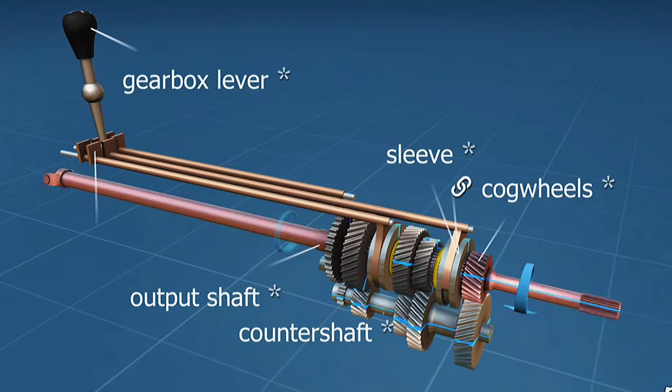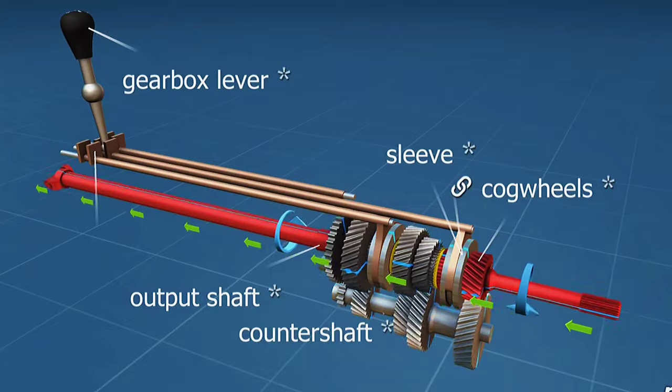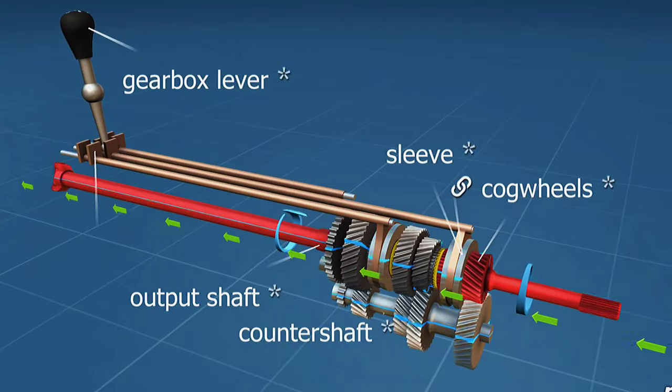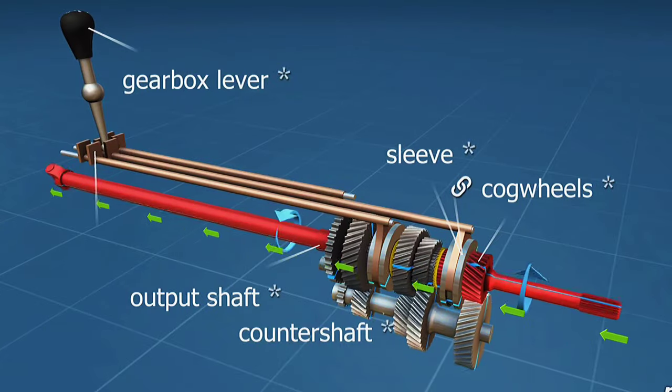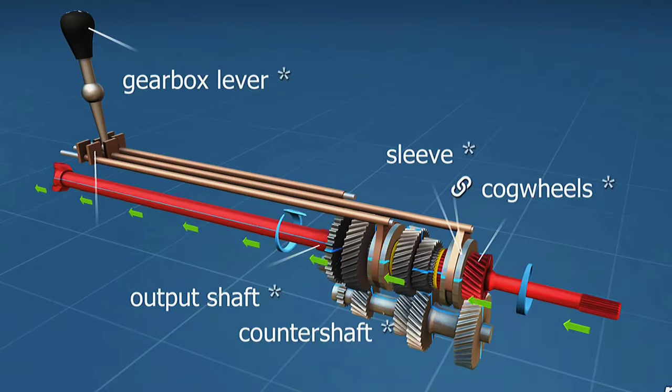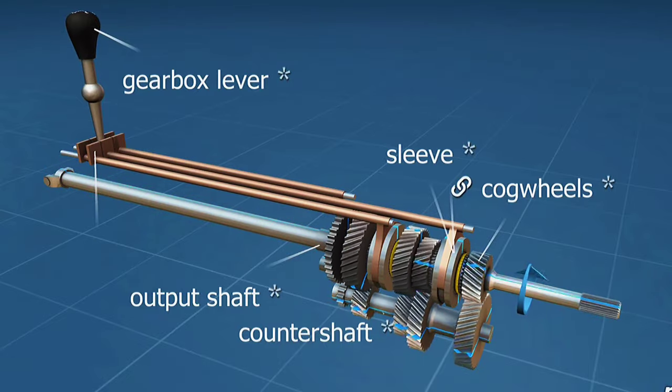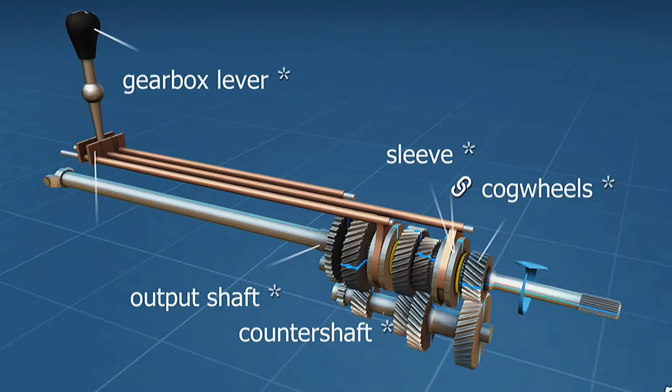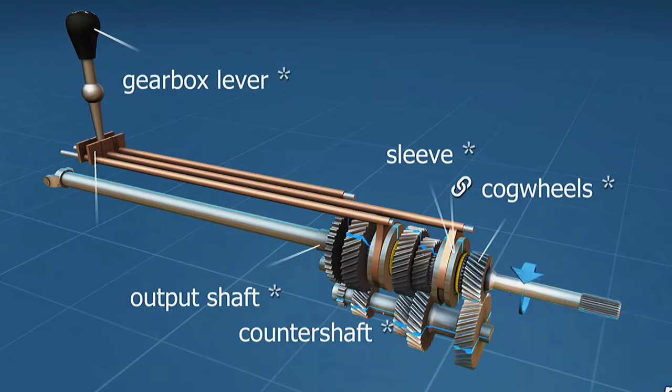In fourth gear, the speed increases further by lowering torque. In this case, drive goes directly through the input and output shafts. No gears are involved in the transmission. The RPM of the engine's crankshaft equals that of the output shaft, hence the name direct drive.